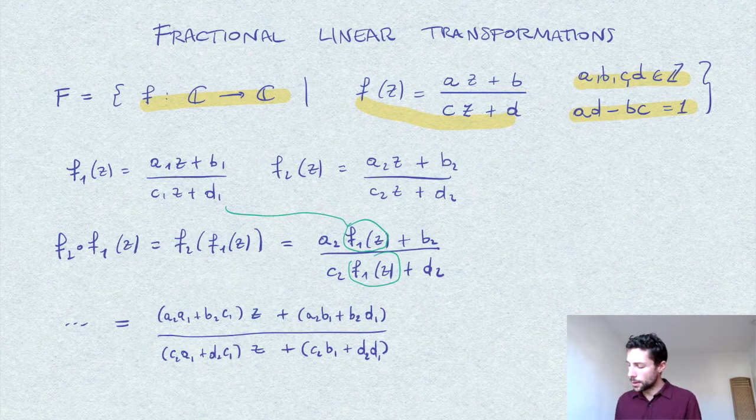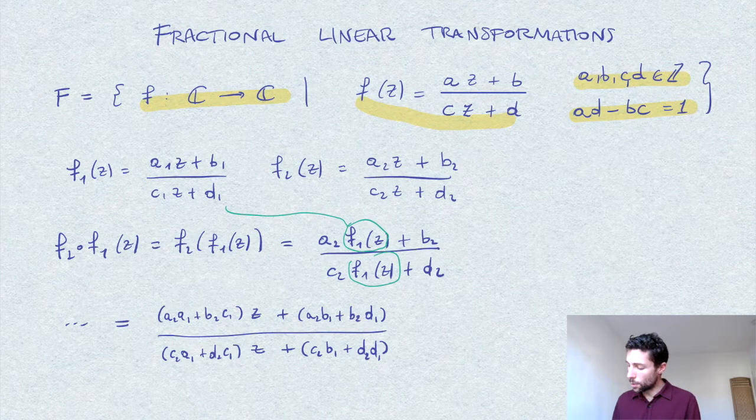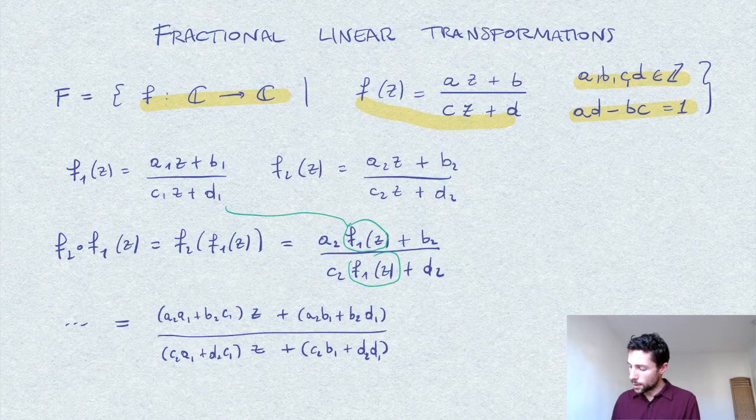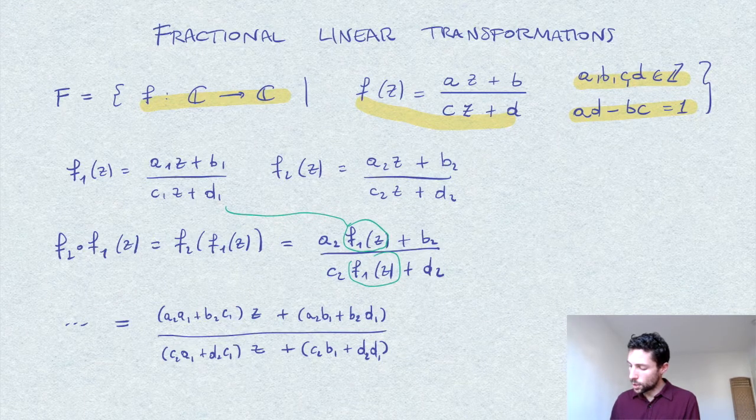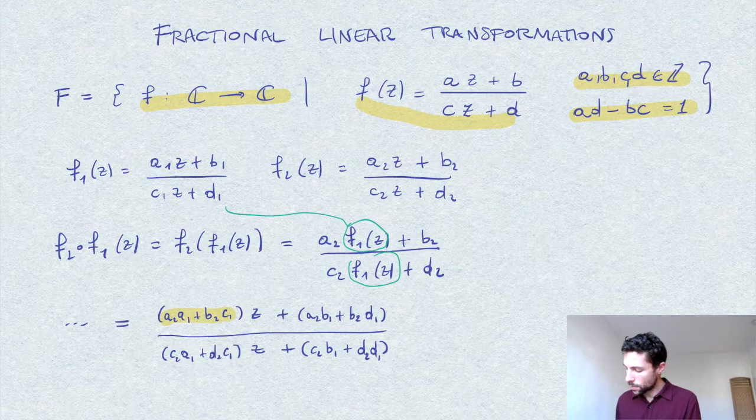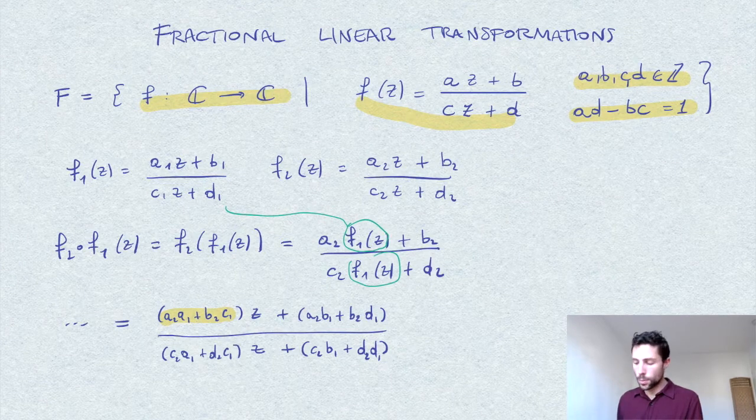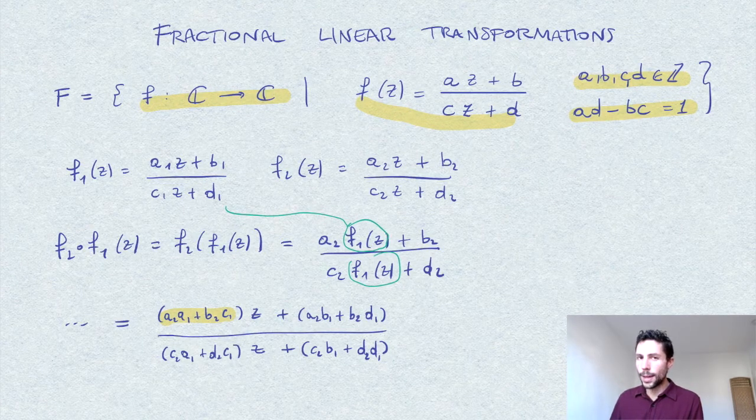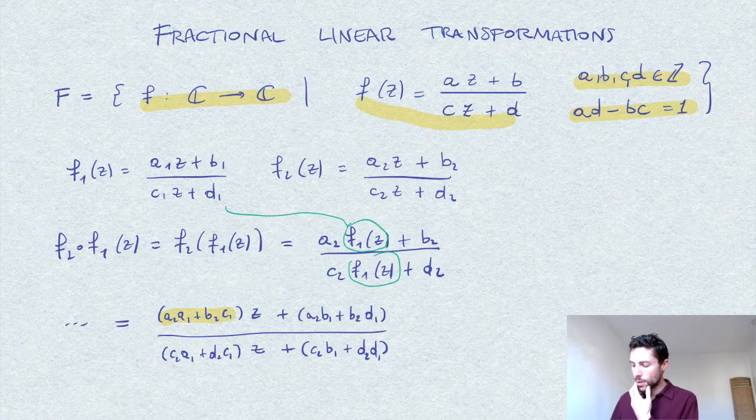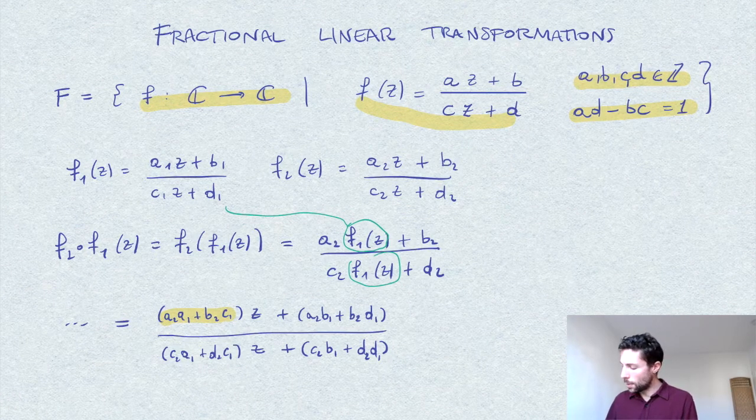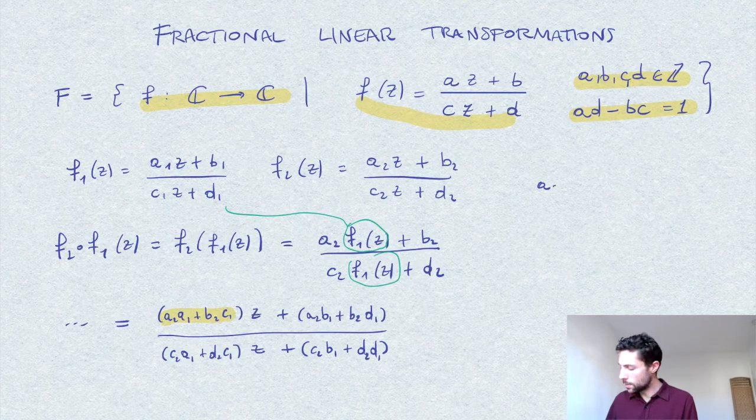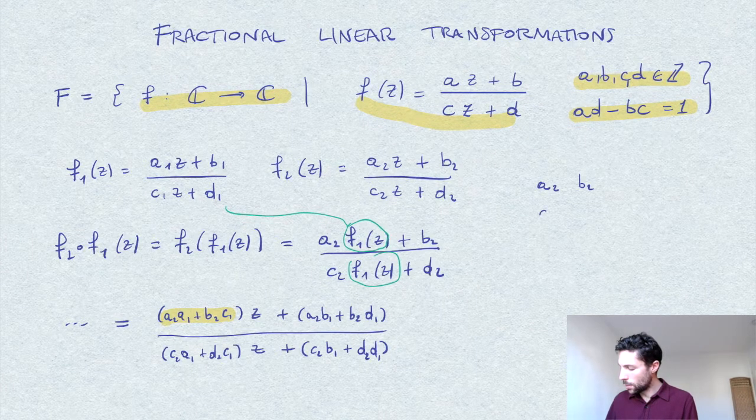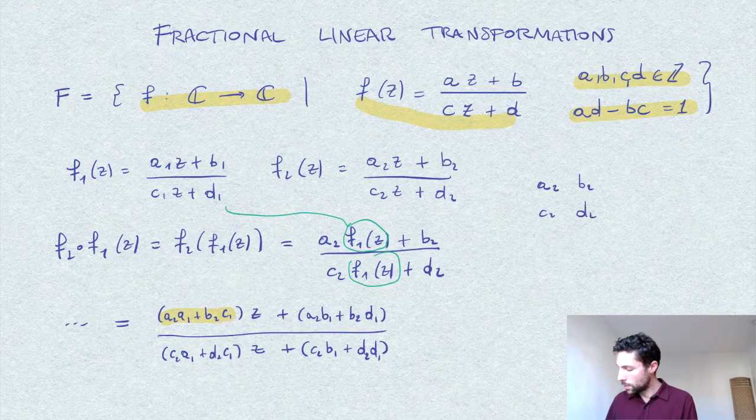I want to take a shortcut based on the observation that these coefficients in the expression for the composition remind us of a product of matrices. Namely, the matrix with coefficients a₂, b₂, c₂, d₂ multiplied by the matrix a₁, b₁, c₁, d₁.